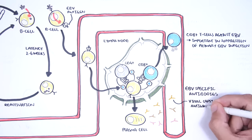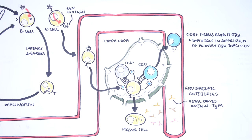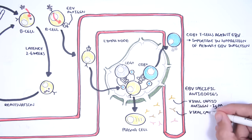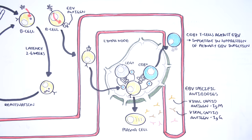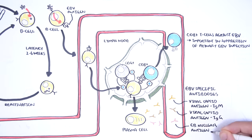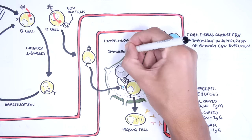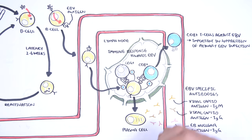The plasma cells first produce viral capsid antigen IgM, followed by viral capsid antigen IgG. Plasma cells then eventually produce Epstein-Barr nuclear antigen IgG once the infection is resolved. The activation of other immune cells in the lymph nodes, spleen, and liver is part of the immune response against Epstein-Barr virus.